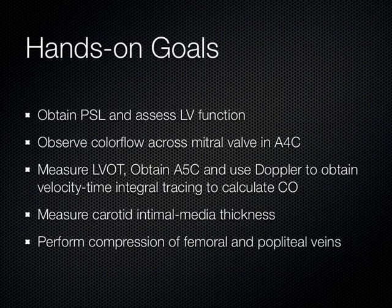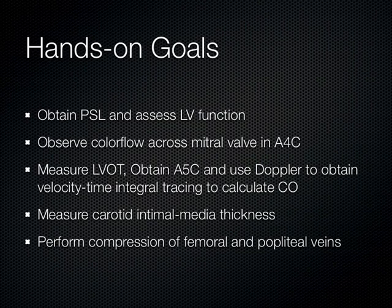Today in the hands-on session: focus on the parasternal long axis and look at overall LV function. Watch that anterior septal leaflet of the mitral valve come up and smack the septum with each beat. See the interventricular septum and posterior wall squeeze together. Throw some color flow across the mitral valve in the apical four chamber. Measure the LVOT diameter back in the parasternal long, plug it into the calculations package, switch over to apical five, drop the Doppler, hit trace, and watch cardiac output pop up on the screen. Look at the carotid artery for that intimal medial layer, then get in the groin and the pop, do compression ultrasound, and do some augmentation.